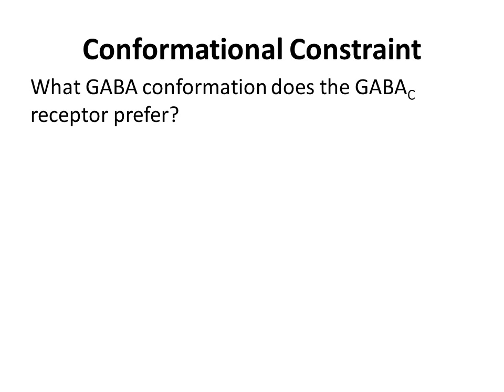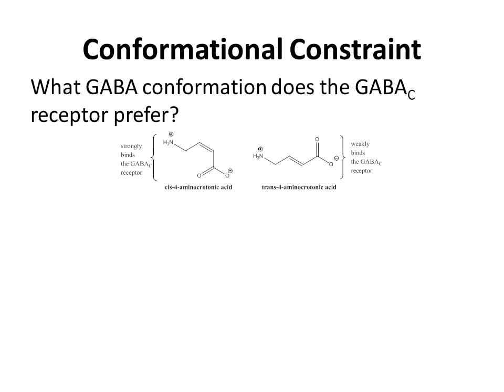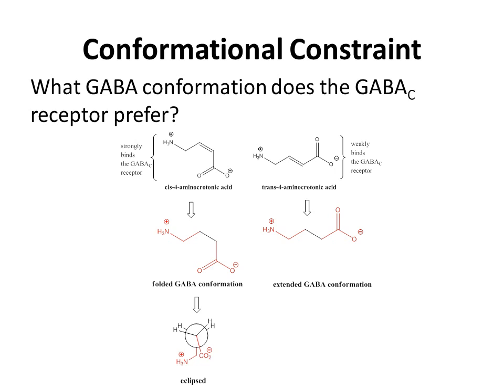In order to study the GABA-C receptor, you need to make conformationally constrained versions of GABA. So what GABA conformation does the GABA-C receptor prefer? It turns out that GABA-C likes to bind to cis-4-amino crotonic acid, but very poorly binds to trans-4-amino crotonic acid. The preferred conformation is the folded GABA conformation, in which the amino group and the carboxylate group are eclipsed, whereas the poorly binding conformation is the extended GABA conformation, where the amino group and the carboxylate group are staggered or anti.